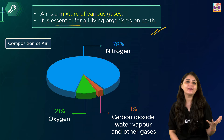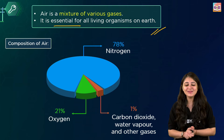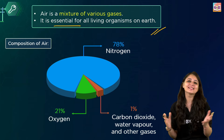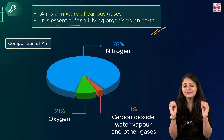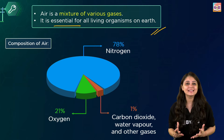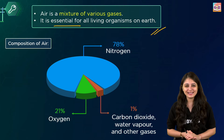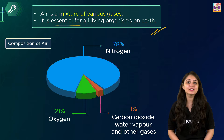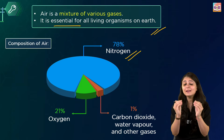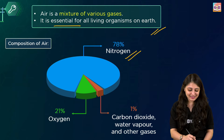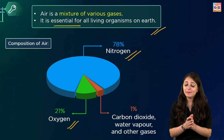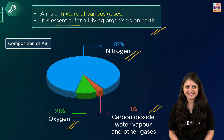Have you ever felt the wind on your face? That's air moving. Unlike things you can touch and see, like toys, trees, or a pen, air is invisible — you can't see it, but you can feel it when it moves, like when the wind blows. Air is made up of different gases, just like different ingredients make up a recipe. The main gases are nitrogen at 78% and oxygen at about 21%. The remaining 1% consists of tiny amounts of other gases like carbon dioxide and water vapor.